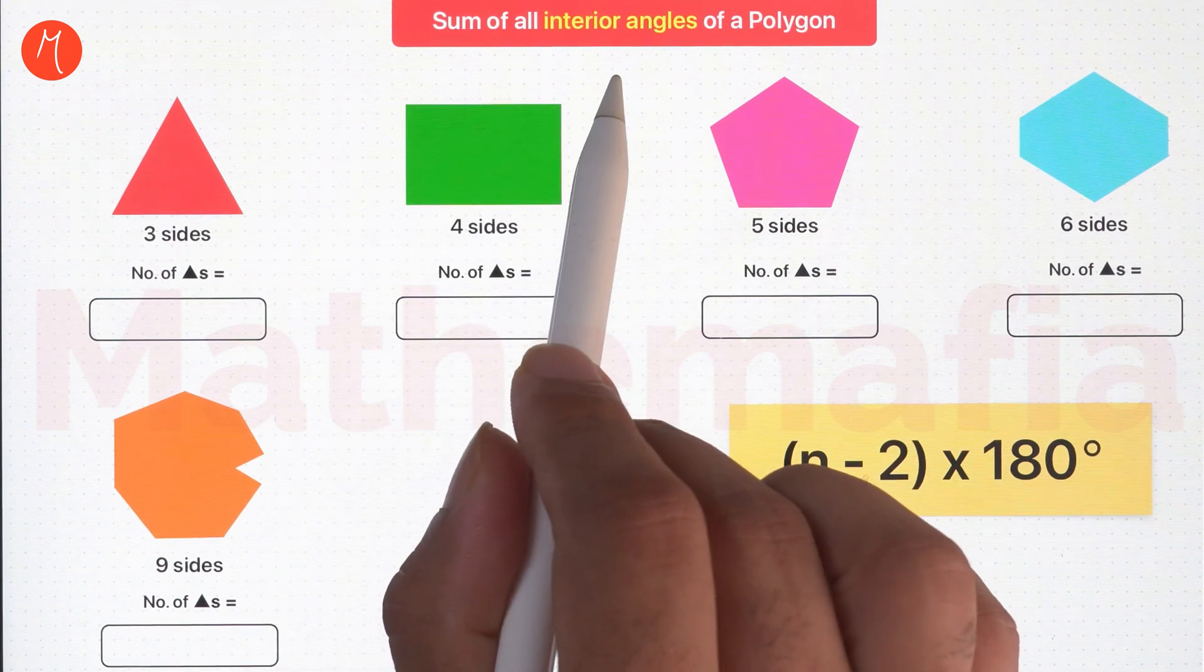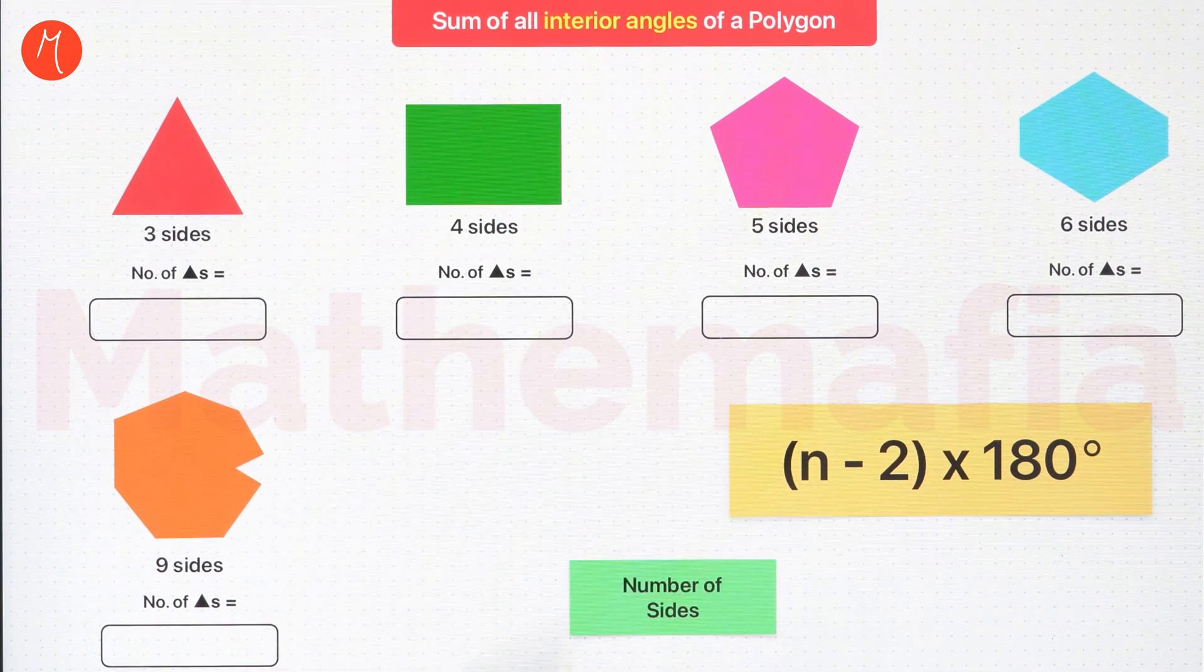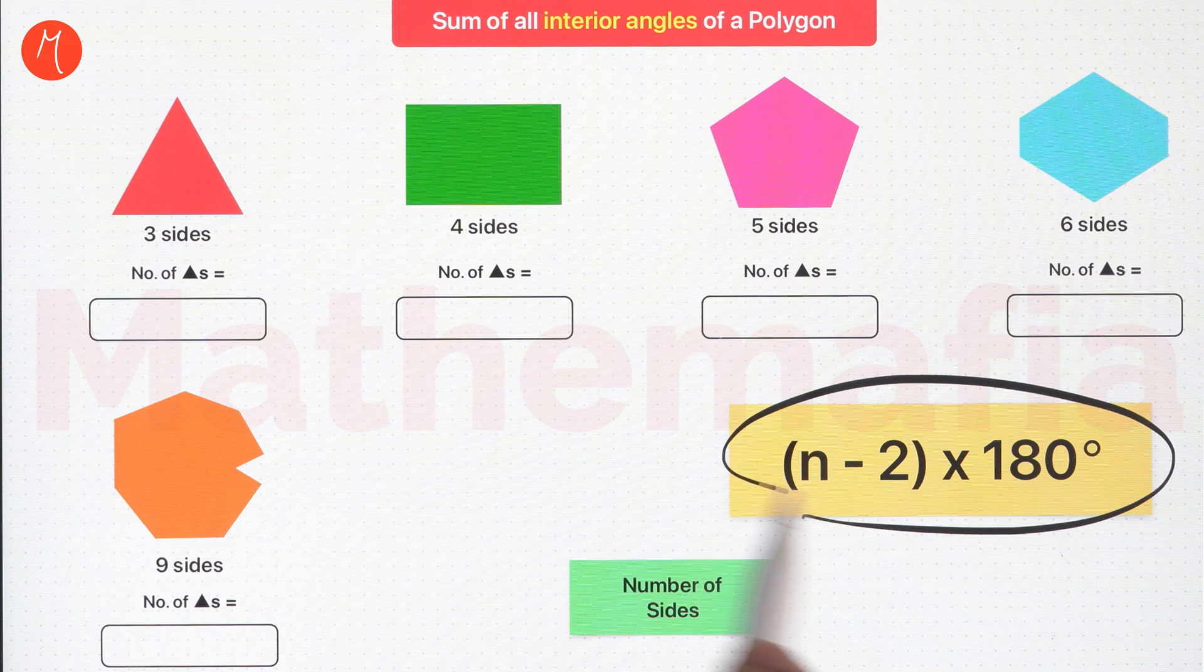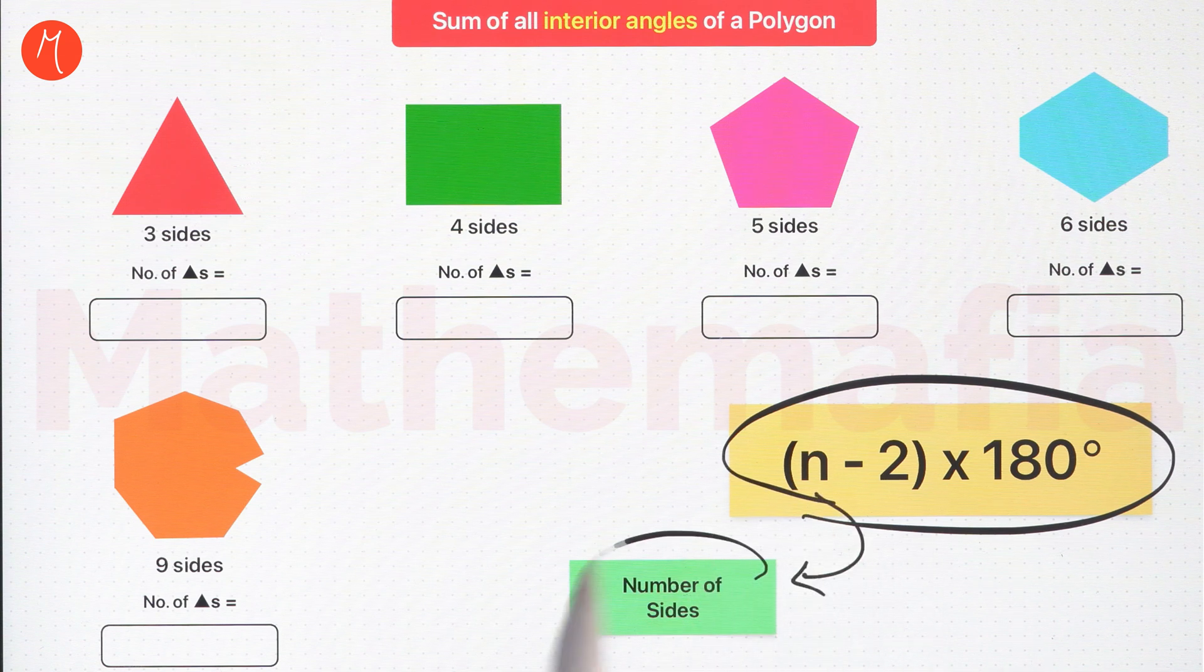Let us learn why the sum of all interior angles of a polygon is always n-2 into 180 degrees, where n is the number of sides of the polygon.